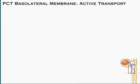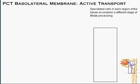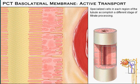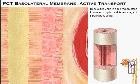We will now begin a tour through the renal tubules. We'll see how the specialized cells in each region accomplish a different stage of filtrate processing. Our first stop is the proximal convoluted tubule, where major reabsorption of valued substances occurs. We'll look first at the activities occurring at the basolateral membrane of the tubular cells.